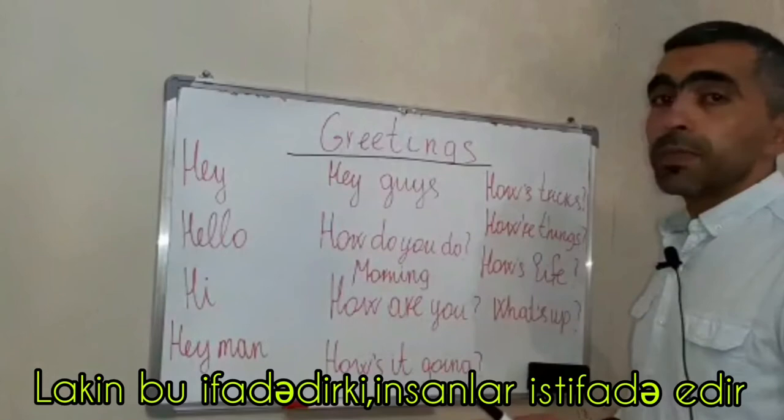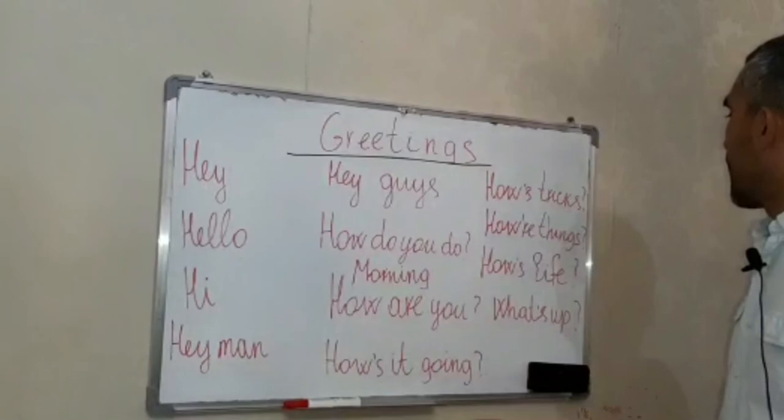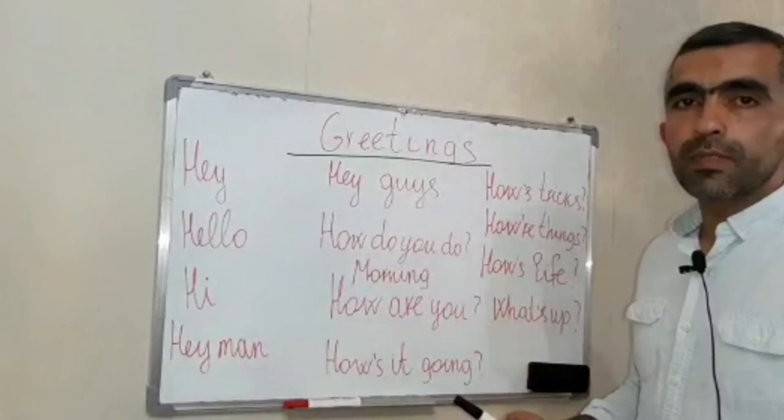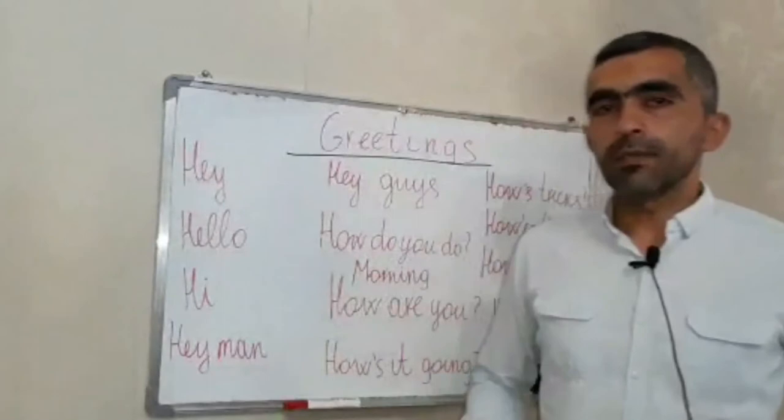'How are things?' and 'how's life?' are also common. 'What's up?' is short for 'what is up' — you don't say 'what is up,' you say 'what's up.' Some native speakers pronounce this phrase as 'what up.' That's all for today — keep trying, never give up, and don't forget to subscribe to my channel. See you later, bye!